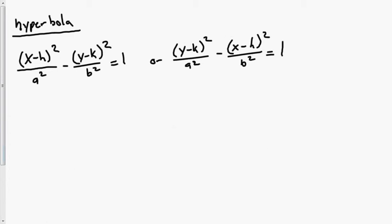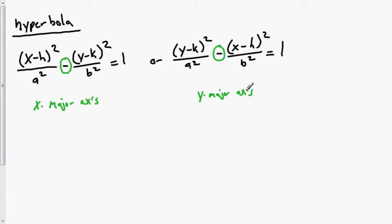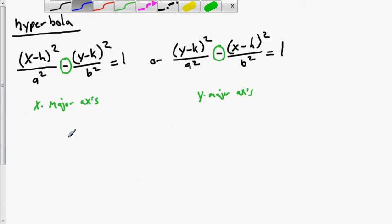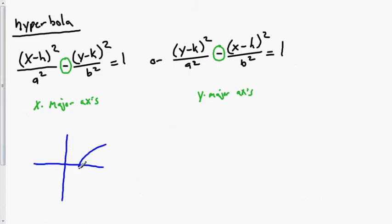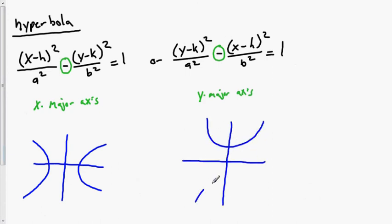Now we want to talk about hyperbolas. Hyperbolas use basically the same type of equation, but the big difference is instead of adding the two terms, we subtract. Instead of comparing a and b to determine the major axis, it depends on whether x is first or y is first in the equation. If x is first, x is the major axis. If y is first, y is the major axis. A hyperbola with x as major axis looks like two parabolas going in opposite directions horizontally; with y as major axis, they open vertically.